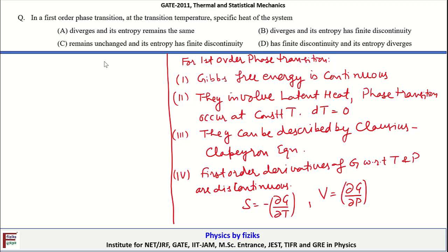For the special case of entropy, since dT = 0 when the phase transition takes place, S diverges at the transition point. More precisely, entropy has a finite discontinuity — it is discontinuous.